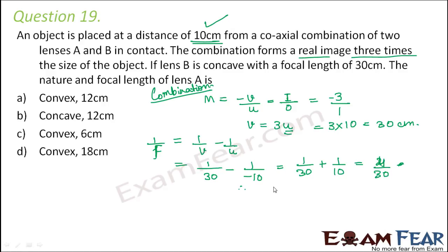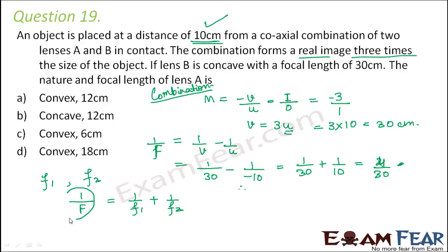In the overall combination, a real and inverted image is formed, so U is negative and V is positive. Now for the combination of two lenses, the overall focal length is 1/F = 1/F1 + 1/F2. The overall focal length is 4/30. So 4/30 = 1/F1 + 1/F2. We have found the overall focal length as 4/30, and this equals 1/F1 plus 1/F2.